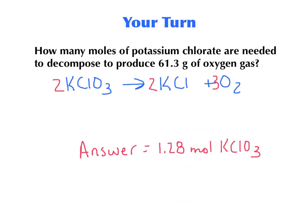There are two problems that I want you to do on your own. This one I've helped you out with. I've given you the balanced equation already. You're looking to find how many moles of potassium chloride you need to decompose to make 61.3 grams of oxygen gas. You should be showing an action line, and if you did everything correctly, then you should get 1.28 moles of KClO3. So set up that action line, pause it, figure it out, and then go to the next problem.